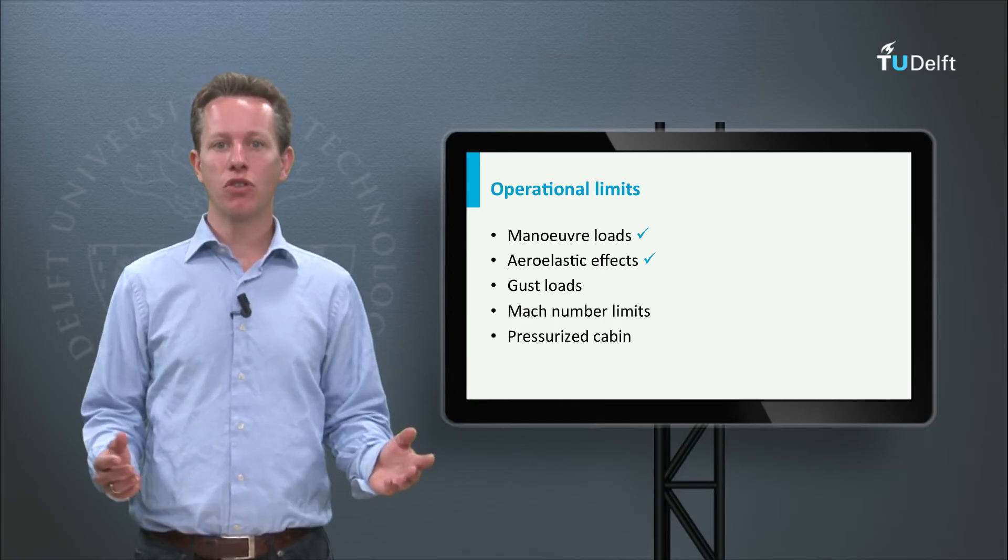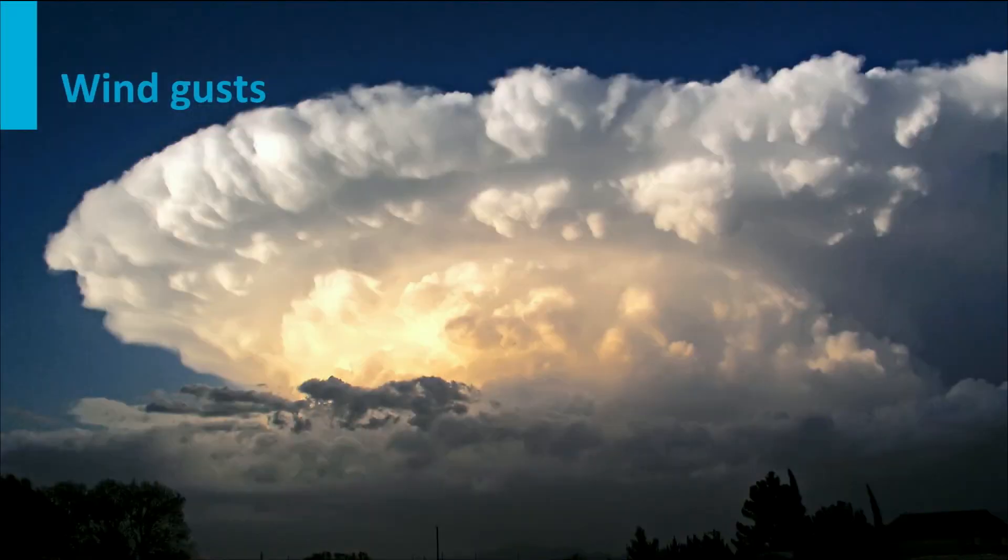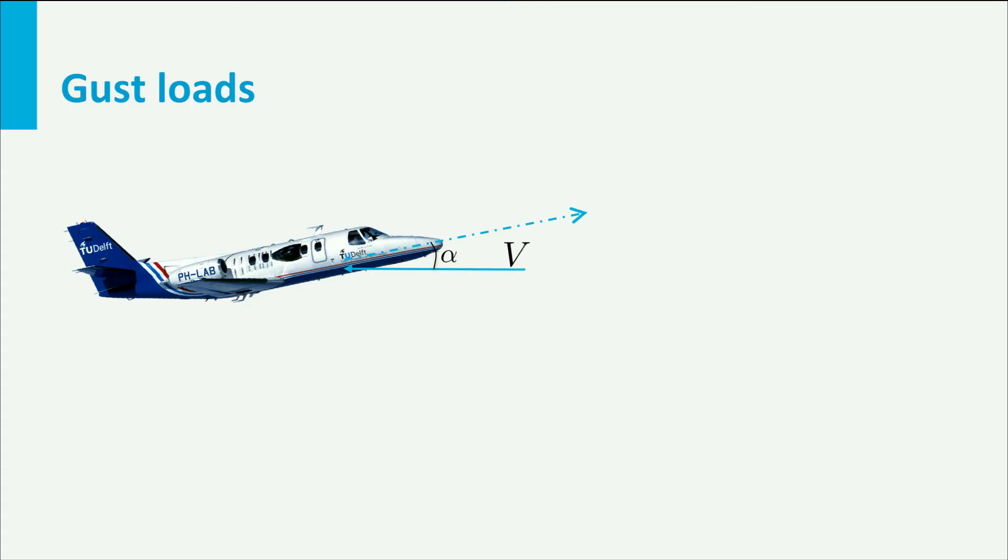During flight, gusts and turbulence can be encountered. Based on statistics of the atmosphere, the magnitude of gusts that will be encountered during the lifetime of an aircraft can be determined. If an aircraft suddenly encounters such a gust, then the angle of attack will change immediately. It is as if you would drive with a car over a speed bump. With a car it is better to drive slowly over speed bumps, and the same holds for aircraft encountering a gust. So what does this mean for the structural loads inside the airframe?